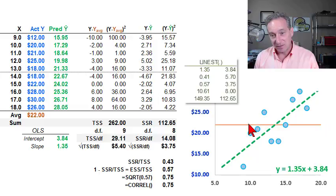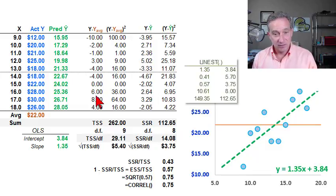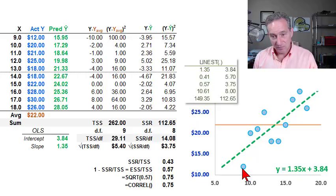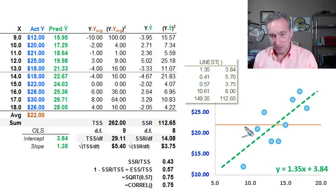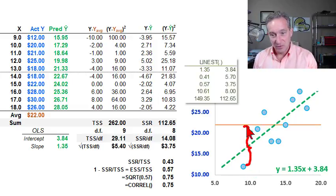The average naturally plots as a horizontal line at $22 per hour. In this column I simply have the difference between the actual Y and the average Y. In the case of the first observation, my actual is $12 per hour, but the average is $22, such that the difference going from the average to the observation is exactly minus $10.